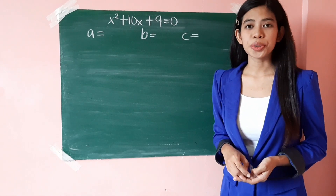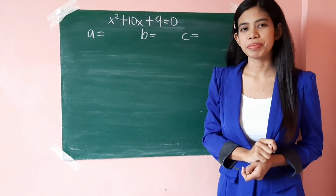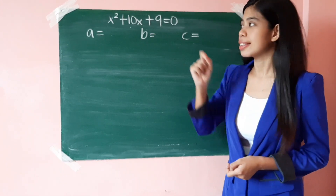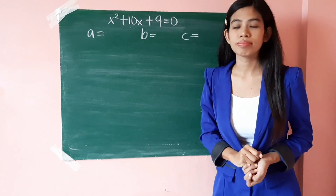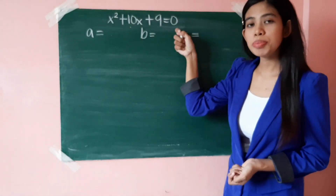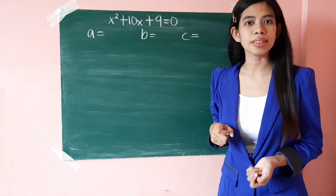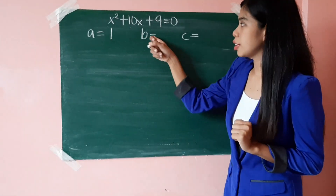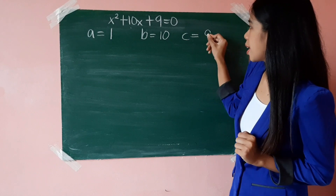Let us now try to solve this quadratic equation by using the quadratic formula. The first thing you have to do is to make sure that the given quadratic equation is written in standard form. Since it is already written in standard form, you may now identify the values of a, b, and c. The value of a is 1, the value of b is 10, and the value of c is 9.